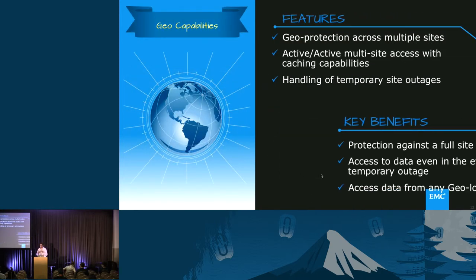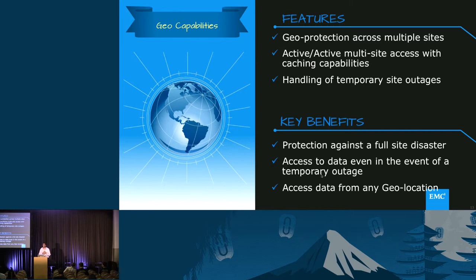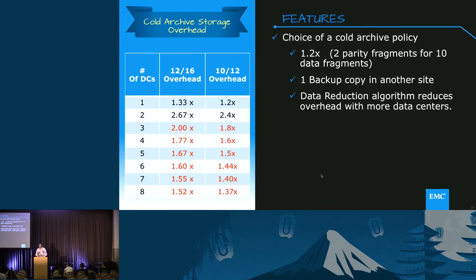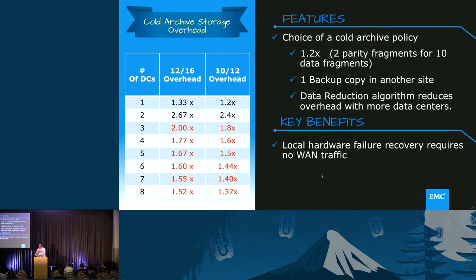Another thing we're doing is geo-replication, which is a very core capability of the product. We manage actually multiple sites — you could go up to eight sites. You can do active-active read-write, so you can read and write data from any location. We also handle both full site disasters as well as temporary outages. When there's a network outage, we give you the eventual consistency model. However, you can also choose strong consistency when the system is fully functional, so you always get the latest version of the data. We support multiple erasure coding policies — 1.2 for cold archive or 1.33 — all available choices for the customer when deploying ECS.